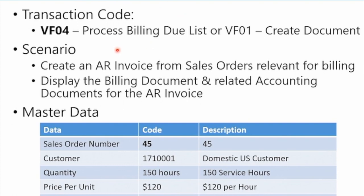The transaction code we're going to use is VF04 — this processes what's called the billing due list, or mass processing of billing documents. VF01 can also be used if you just want to create a single document. The scenario here is: we want to create AR invoices from sales orders that are relevant for billing, then display the billing document and related accounting documents. Although we'll run the billing due list for multiple orders, we're just going to invoice one order — number 45 — at a price with a defined quantity.